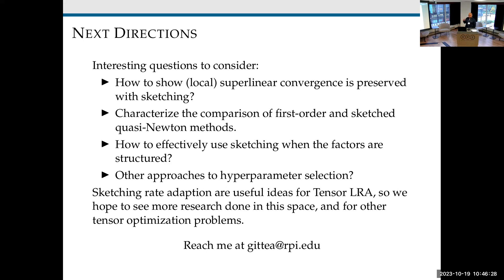Another problem we're looking at now is how to effectively use sketching when the factors are structured — for example, sparse or positive — where you have additional regularization like L1 or the convex indicator for the positive orthant. We want to understand how to still effectively use second-order information when our problem is no longer quadratic. Also, are there other approaches to hyperparameter selection? This current approach has some hyperparameters, like the bias on the coin. In general, there are a lot of tools for sketching in tensor settings, and we'd like to prove that they preserve the convergence of many different tensor optimization algorithms.